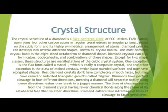Crystal Structure. The crystal structure of a diamond is a face-centered cubic or FCC lattice. Each carbon atom joins four other carbon atoms in regular tetrahedrons. Based on the cubic form and its highly symmetrical arrangement of atoms, diamond crystals can develop into several different shapes, known as crystal habits. The most common crystal habit is the eight-sided octahedron, or diamond shape.